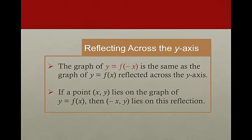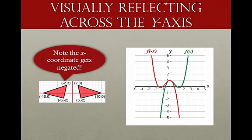If the point (x, y) lies on our original graph, then negating the x — so (−x, y) — lies on the reflection across the y-axis. I'm showing you with some triangles how we are negating the x when we flip this triangle across the y-axis. Note your y-coordinates always stay the same. We can take the top coordinate (2, 3) reflected across the y-axis: the 2 becomes negative 2, but the 3 remains the same. By changing the sign of the x's, we are reflecting across the y-axis.